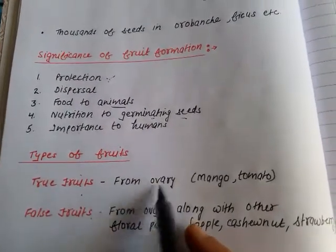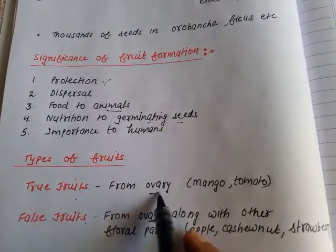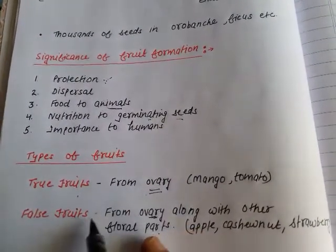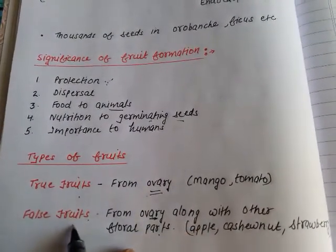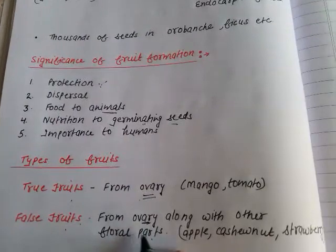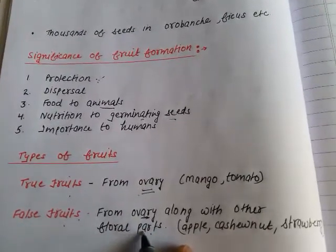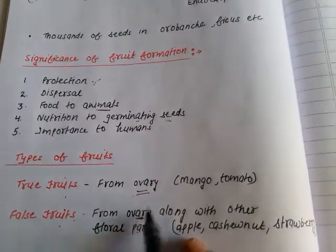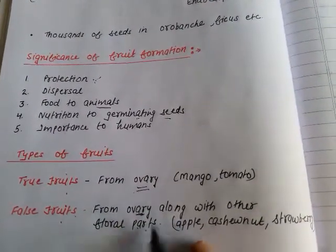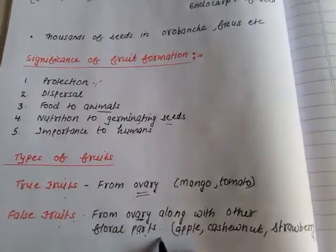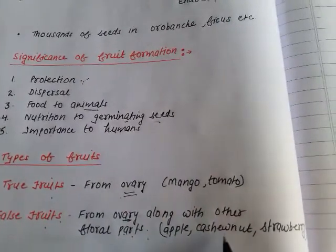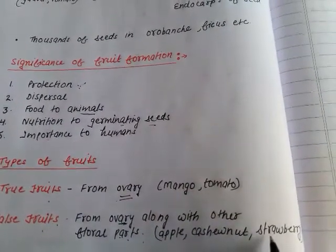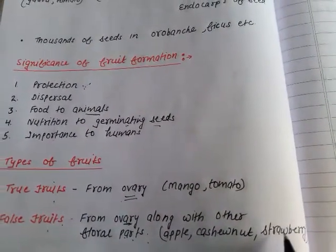In true fruits, only the ovary is involved. But in case of false fruit, the thalamus, other floral parts, and ovary — all are involved. Examples of false fruits are apple, cashew nut, and strawberry.